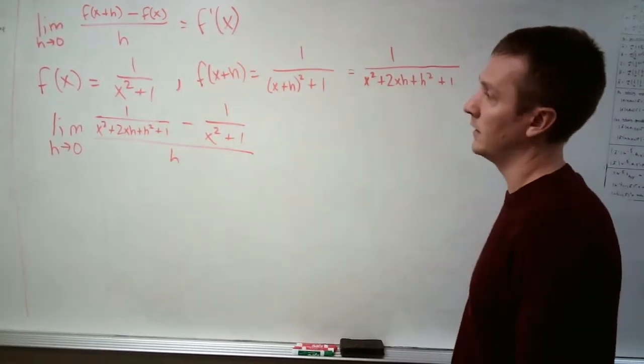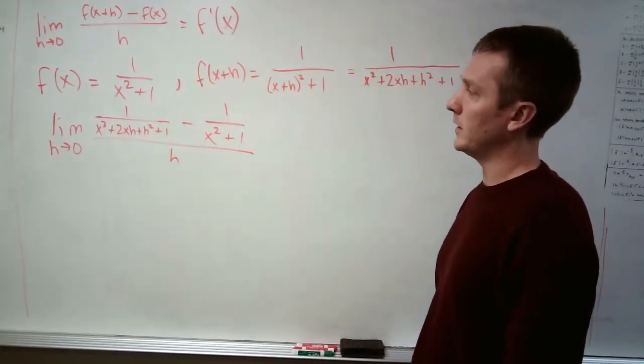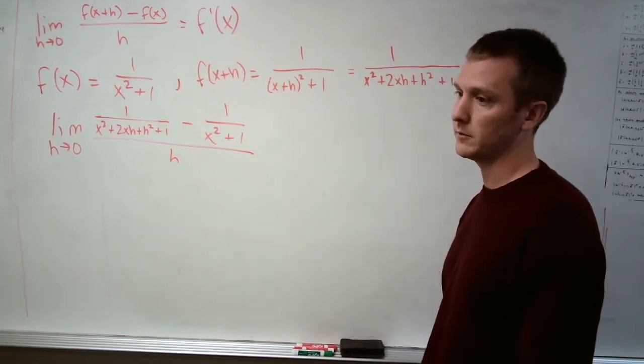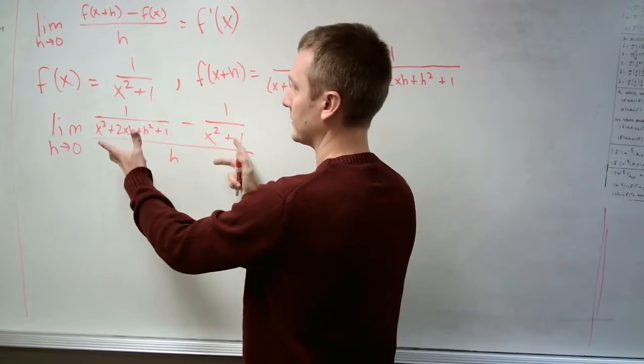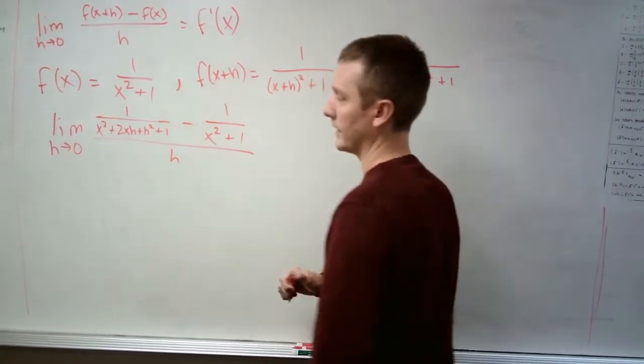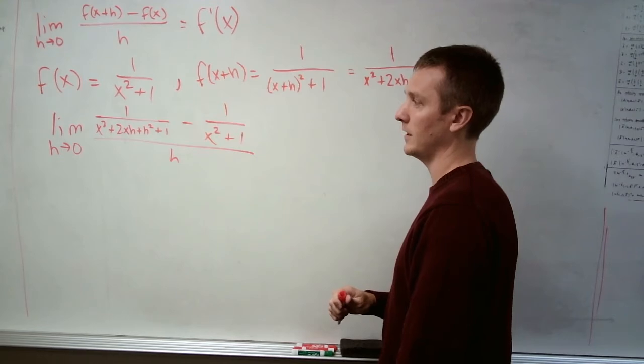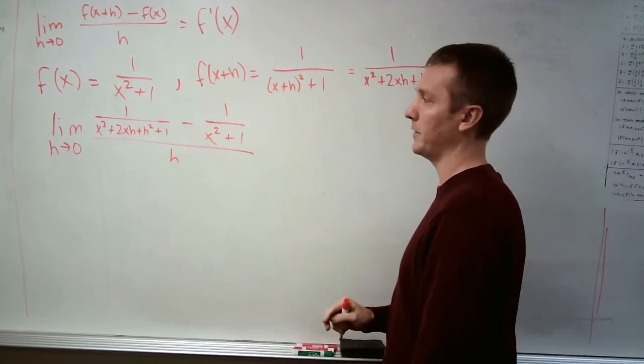At this point, we need to find this difference on top, which means we need to find a common denominator for these two fractions. And as I've said before, when you've got polynomials in the denominators,